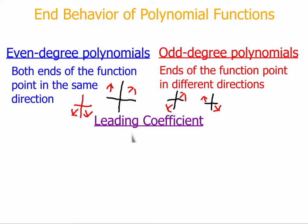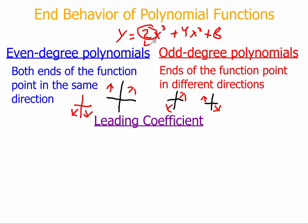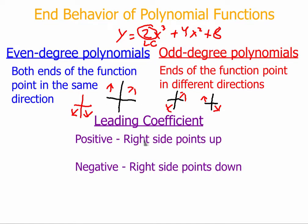You can tell which directions they're going to point based on the leading coefficient — that's the coefficient of the first term. So if I gave you y equals 2x cubed plus 4x squared plus 8, the leading coefficient would be 2. If the leading coefficient is positive, then the right side points up. If negative, the right side points down. So if it's even and positive, both ends point up. If it's odd and negative, the right side points down and the left side points up.